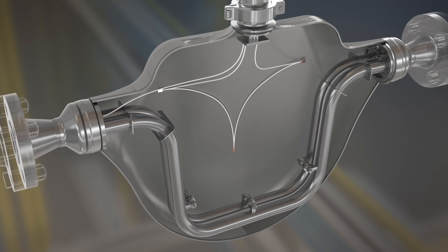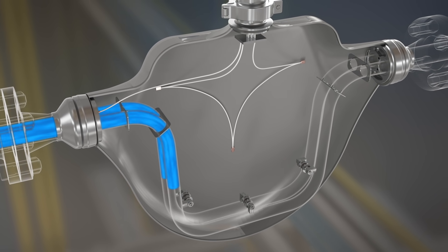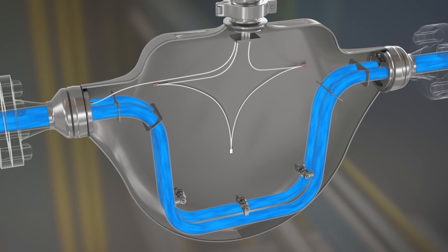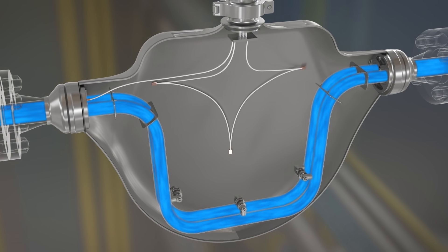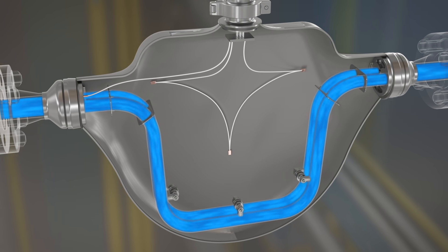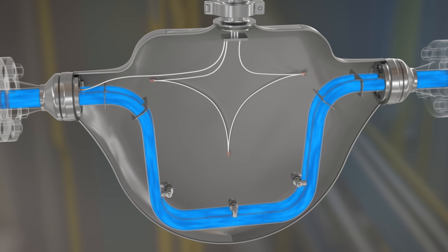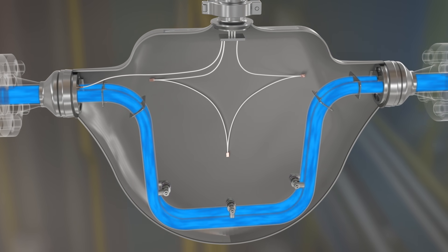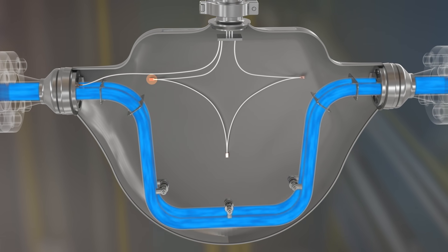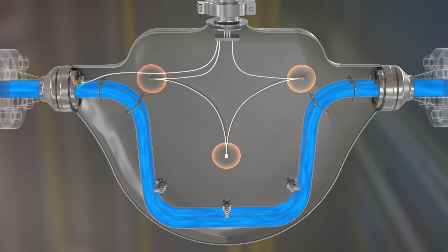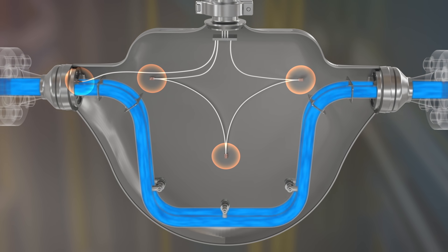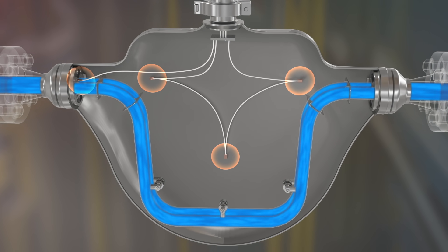The Compact Density Meter, or CDM, has three primary components: vibrating tubes, drive and pick-off coils, and a series of tube and case temperature sensors.